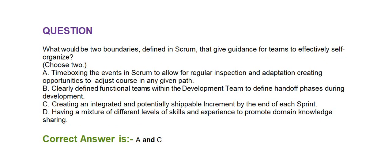Next question: What would be the two boundaries defined in Scrum that give guidance for teams to effectively self-organize? Choose two. Option A: time-boxing the events in Scrum to allow for regular inspection and adoption, creating opportunities to adjust course. Option B: clearly define functional teams within the development team to define handoff phases during development. Option C: creating an integrated and potentially shippable increment by the end of each sprint. Option D: having a mixture of different levels of skill and experience to promote domain knowledge sharing. Correct answer is Option A and Option C.